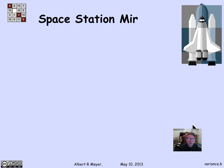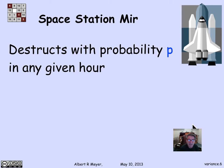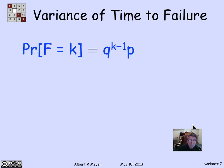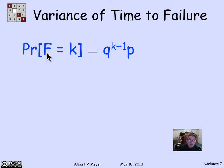Let's look at the space station Mir again, which we used as an example of calculating mean time to failure. The hypothesis is that with probability p, the Mir space station will run into space debris in any given hour. We know the expected number of hours to failure is 1/p — the mean time to failure. We want the variance of f, where f is the number of hours to failure. One approach: use the geometric distribution, where P(f = k) = q^(k−1) · p.